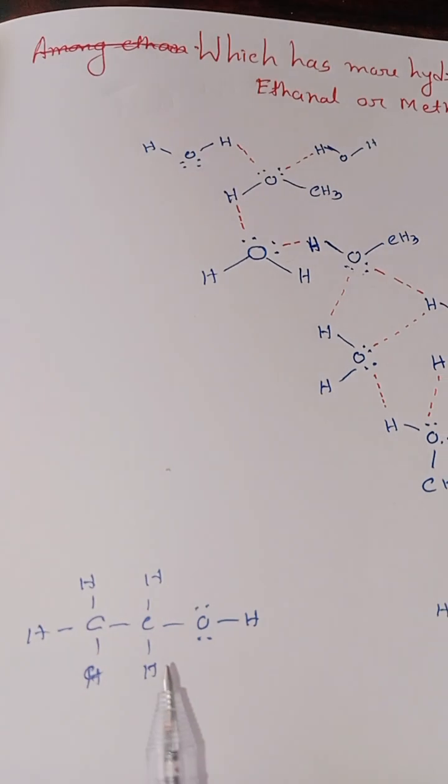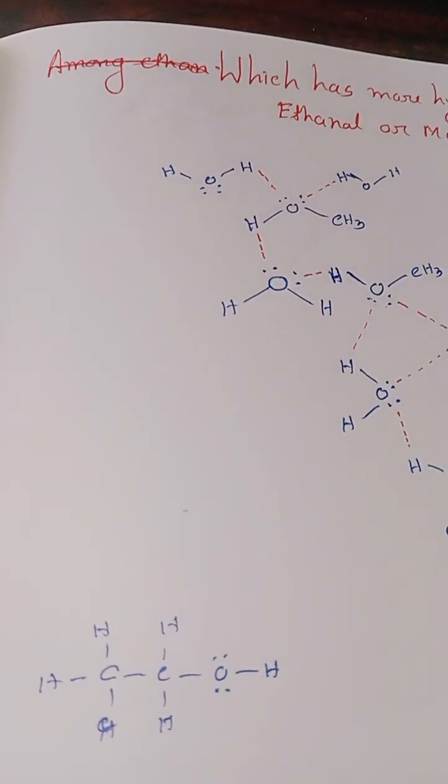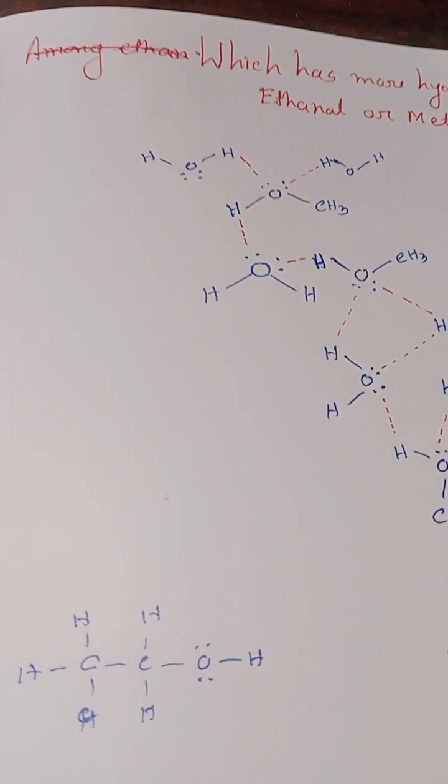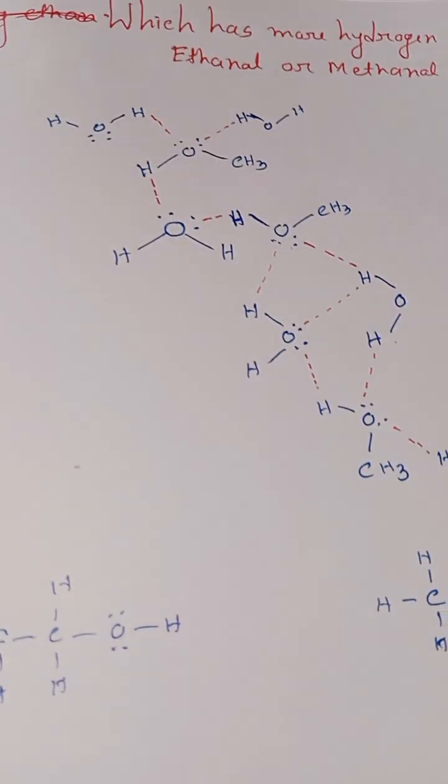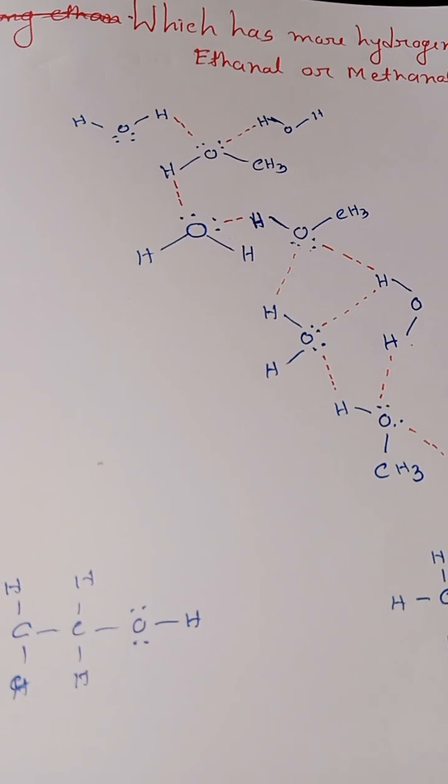Now ethanol also has oxygen with two lone pairs. That means it can make two hydrogen bonds with two ethanol molecules or two water molecules. So the number of hydrogen bonds will be the same for ethanol and methanol.